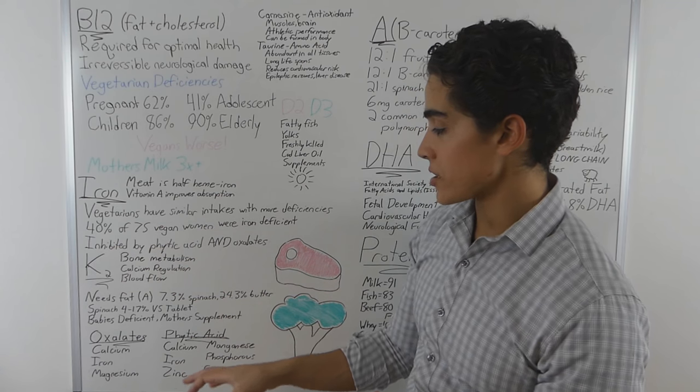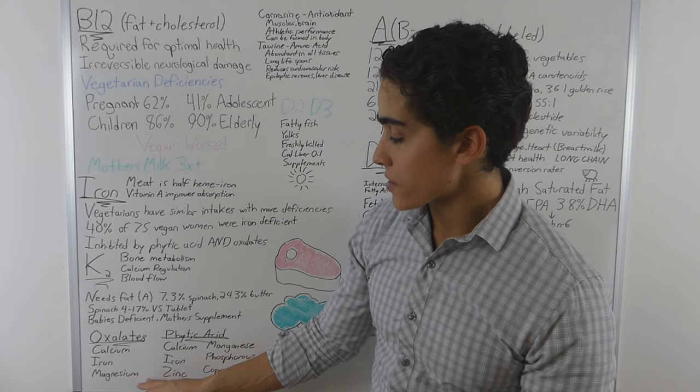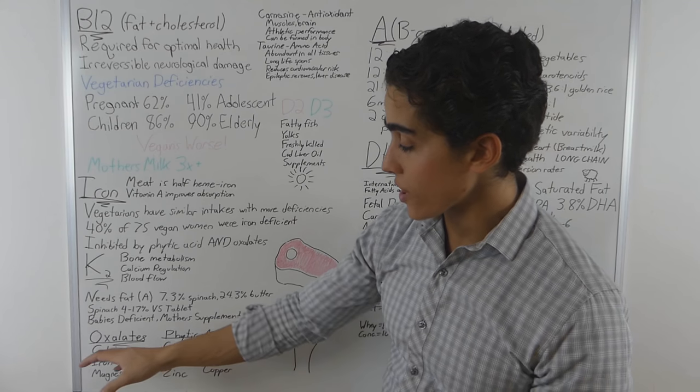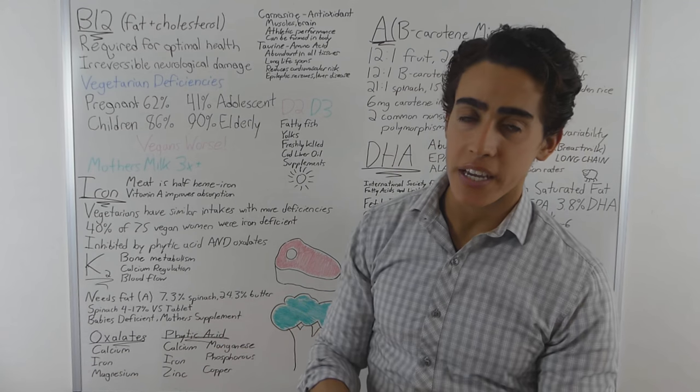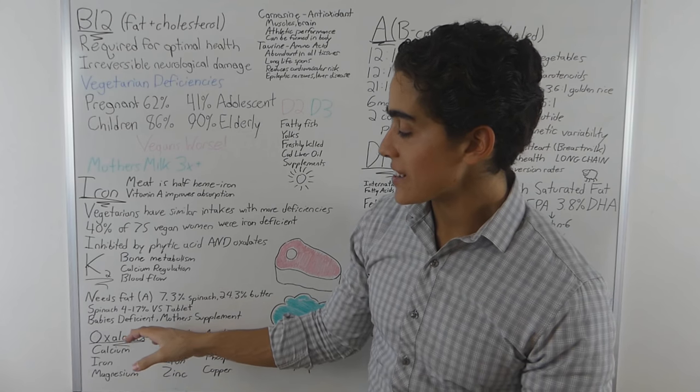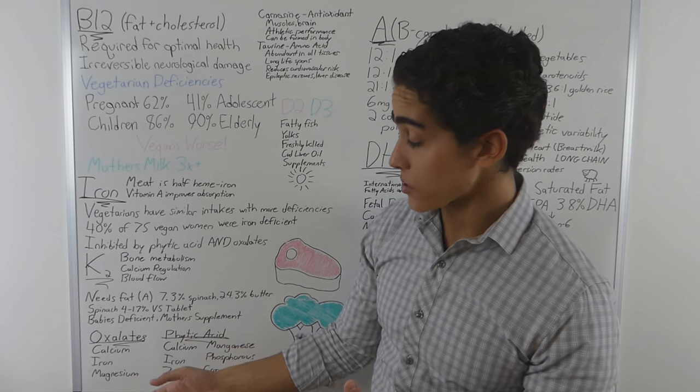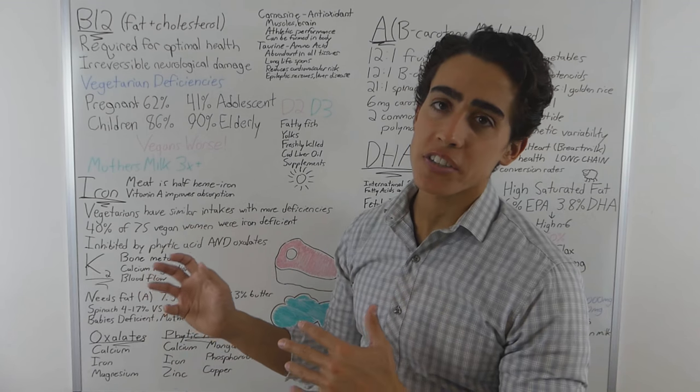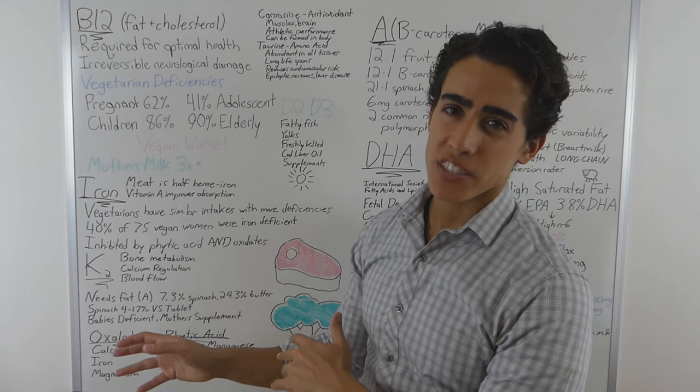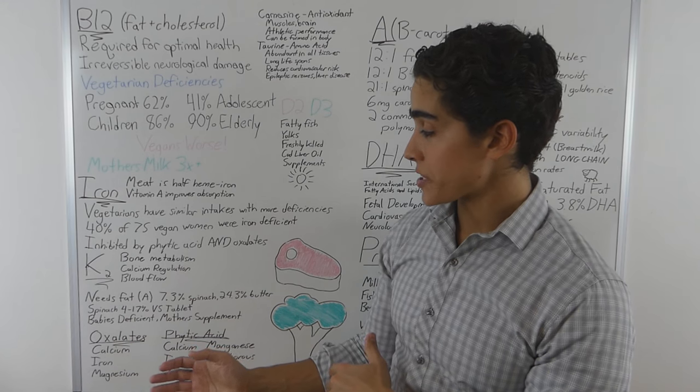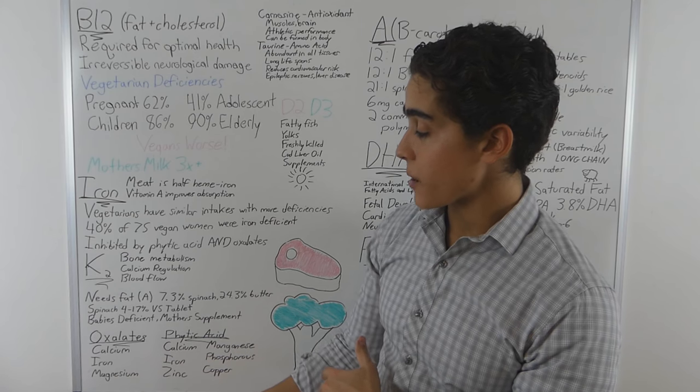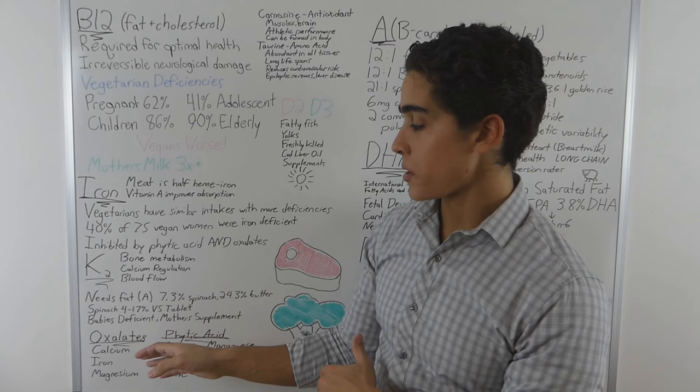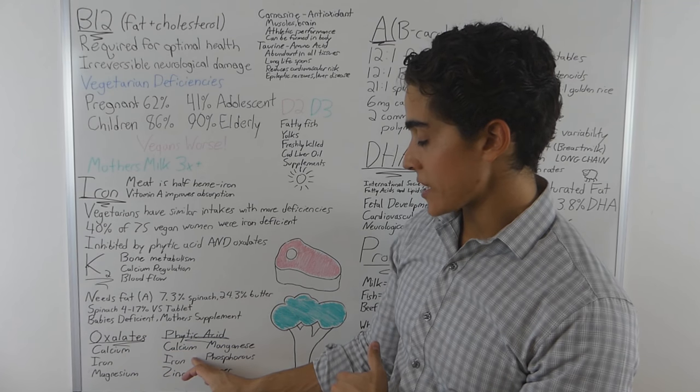Inhibited by phytic acid and oxalates. Oxalates bind to calcium, iron, and magnesium, primarily. And phytic acid binds to calcium and iron overlapping, and then zinc, copper, phosphorus, and manganese. And I have a study linking each of these to the inhibition of these minerals. Literally like 15 studies I'm going to link you guys. But I'm not going to go too much into anti-nutrients in this video because I do have a separate video speaking on other various anti-nutrients. It is important to note though that the reason a lot of the minerals in a vegan diet are not available is because of the incredibly high oxalate and phytic acid content.